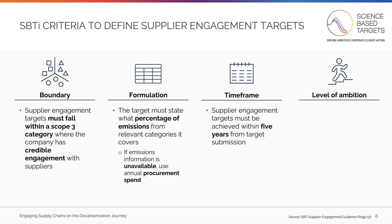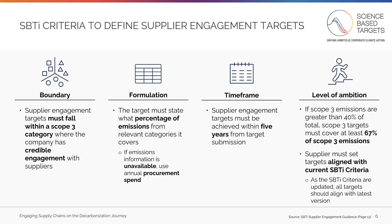Third, in terms of timeframe, the supplier engagement target must be achieved within five years of submission. And fourth, if Scope 3 emissions are greater than 40% of a company's total emissions, Scope 3 targets must cover at least 67% of Scope 3 emissions. Suppliers must set their Scope 1, 2, and 3 targets aligned with the current SBTi criteria. Further information on SBTi criteria can be found in the document titled SBTi Criteria and Recommendations for Near-Term Targets, linked in the description below.